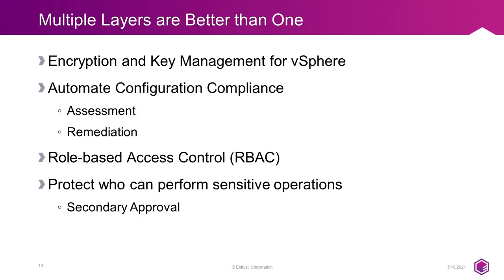That was a lot of content to consume in a short amount of time — I hope you're still with me. Hopefully I made the point that multiple layers of security are better than one, and how Entrust Data Control, Key Control, and Cloud Control can provide the additional layers of security needed to protect your most sensitive data, automate assessment and remediation of your environment, and provide rule-based access control and secondary approval workflows so your virtual admins can complete daily tasks while being protected from costly mistakes. Thanks for attending, and I hope you enjoy the rest of the VMUG event.